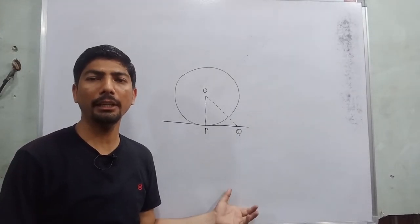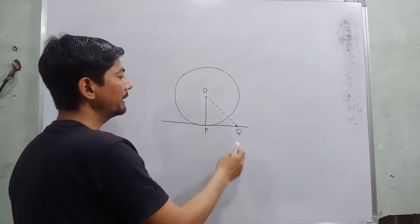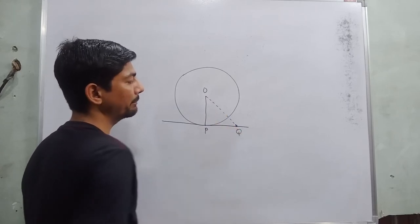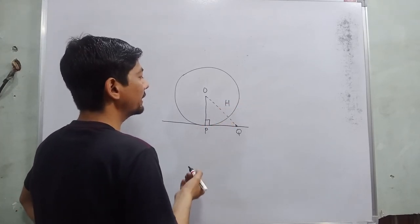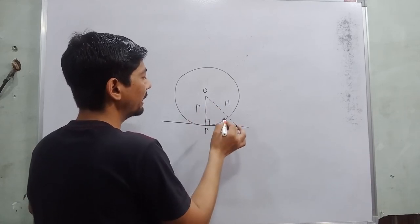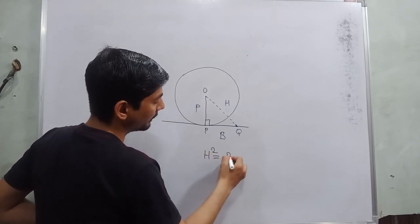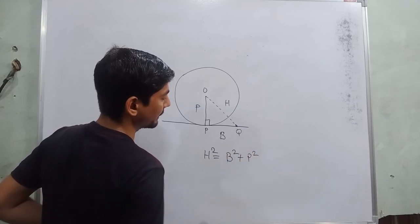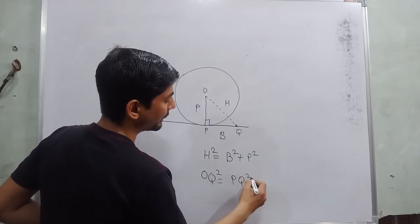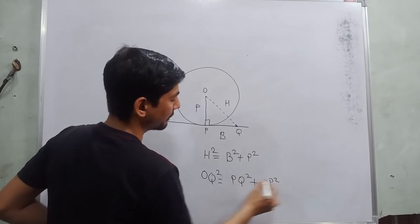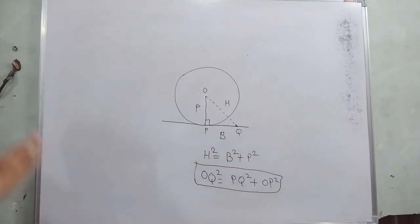Last mein dekho kuch numerical portion aaya hai jahan Pythagoras theorem lagega. Yahan yeh circle ka radius hai, yeh tangent hai, aur yeh line OQ tangent ko kisi external point par meet kar rahi hai jo circle ko touch nahi kar rahi. Is case mein yeh 90 degrees hai, opposite side hypotenuse ban jaayegi, yeh perpendicular hoga, aur yeh base hoga. Pythagoras theorem: hypotenuse² = base² + perpendicular². Toh OQ² = PQ² + OP². Yeh formula numerical solve karne ke liye apply hoga.